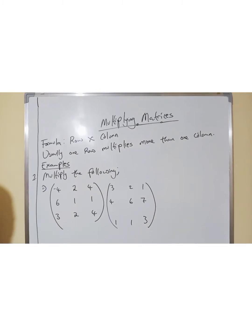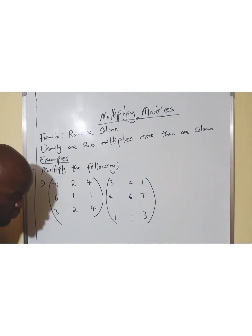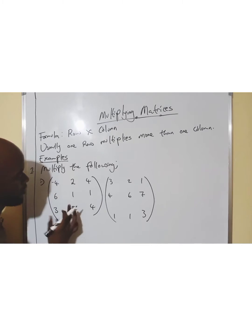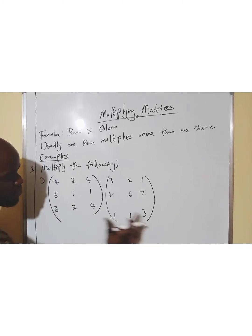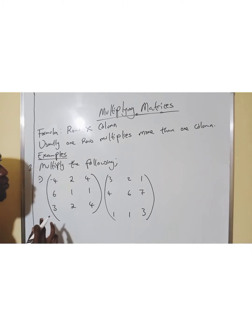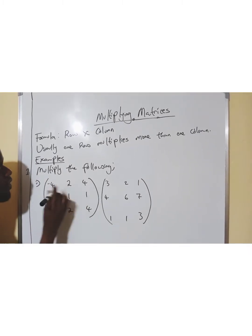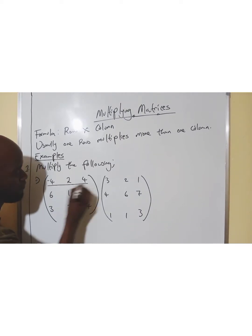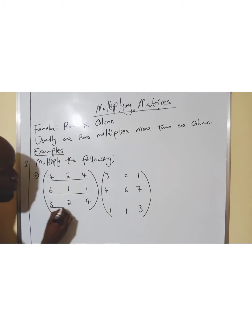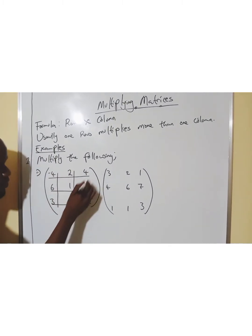We'll start with example one. So, you have this matrix. There are two matrices. They have said multiply the following. You have this matrix and you have that matrix. So, what you do is this — you have to find the order. So, this negative 4, 2, 4 — this is known as your row. And this is a column.